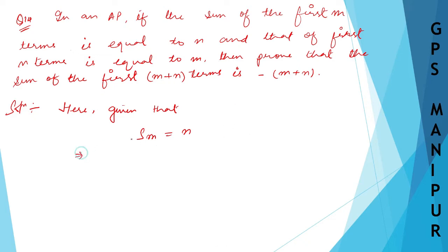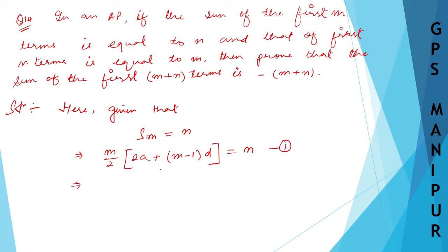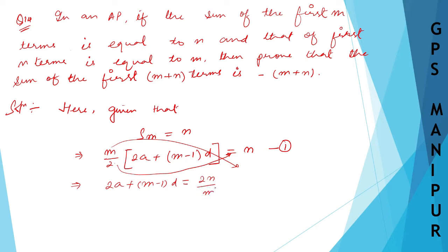Given S_m = n, I can write: m/2 × (2a + (m−1)d) = n. Rearranging, 2a + (m−1)d = 2n/m. I'll name this Equation 2.